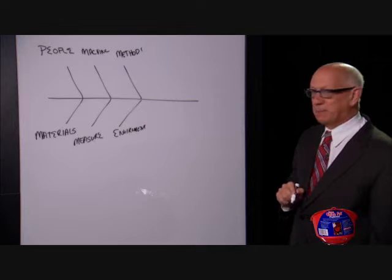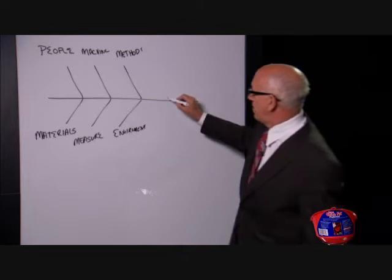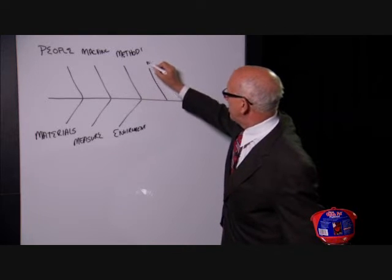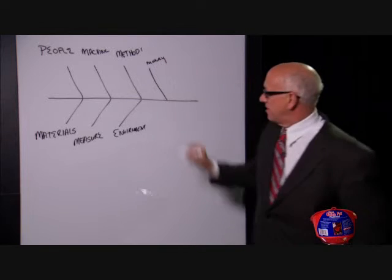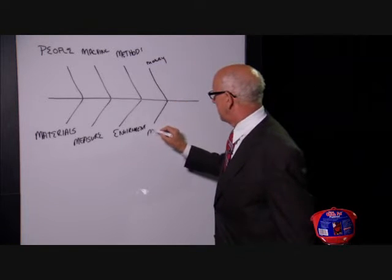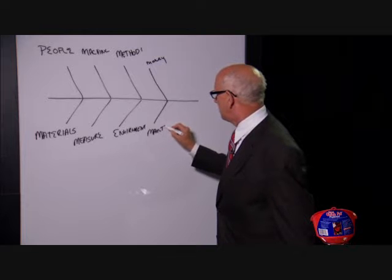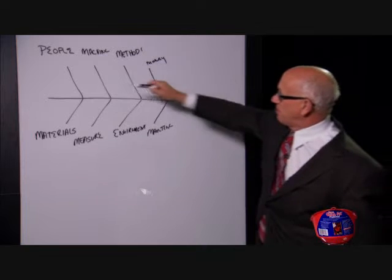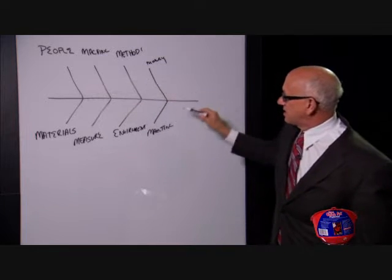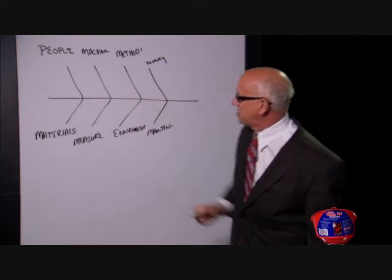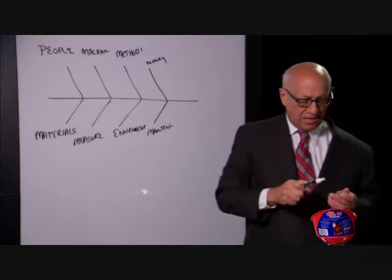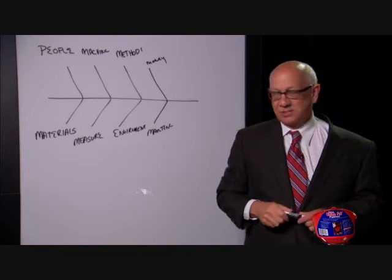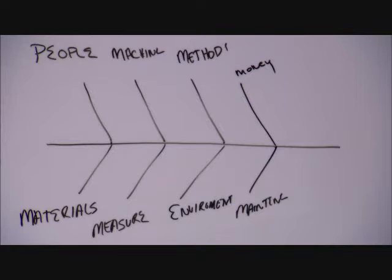There are two others that sometimes get added, and they're easy to remember: money, and maintenance. After time, things may wear down. If you can write those things down, you can break down the process into things causing variation and find what's most important in how they vary it. So: people, machine, methods, materials, measure, environment, and two more M's — money and maintenance.